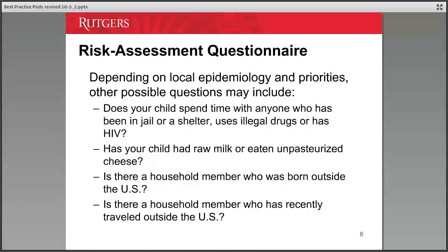Other possible risk assessment questions include: Has the child spent time with someone in jail, a shelter, or someone illegally using drugs? Is there a household member born outside the United States, or one who recently traveled outside the U.S.? We've had several children with TB meningitis — all U.S. born — whose risk factor was a household member or family friend born outside the U.S. who turned out to be the index case. This questionnaire is extremely important in identifying risk factors.